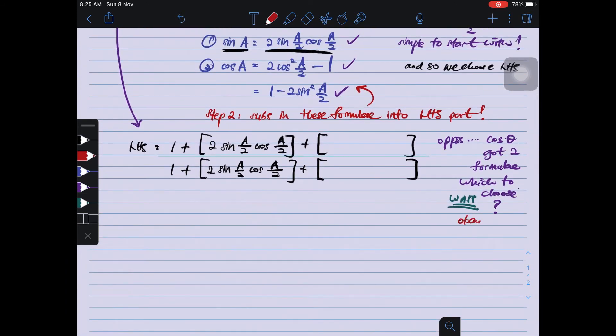So here in this blank bracket here, I need to be careful and choose the correct formula to put there. So I need to go to my right hand side. My right hand side, I know it is cotangent theta over 2, so cotangent means cos over sin.